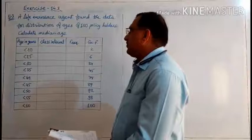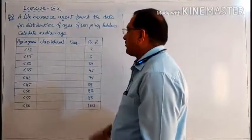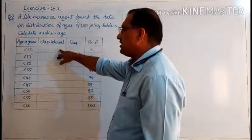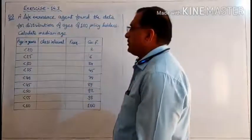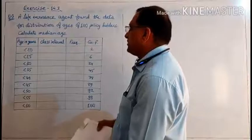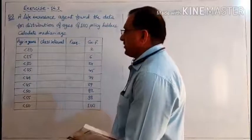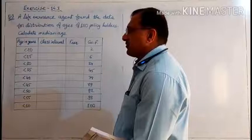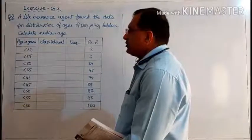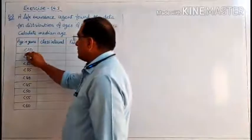For median we have to go for frequency and class interval, because we want the median class and lower limit. Here cumulative frequency is given. Earlier we have seen frequency is given and we used to go for cumulative frequency. Here a less-than cumulative frequency distribution is given, so we need to convert it into a continuous frequency distribution with equal class length.